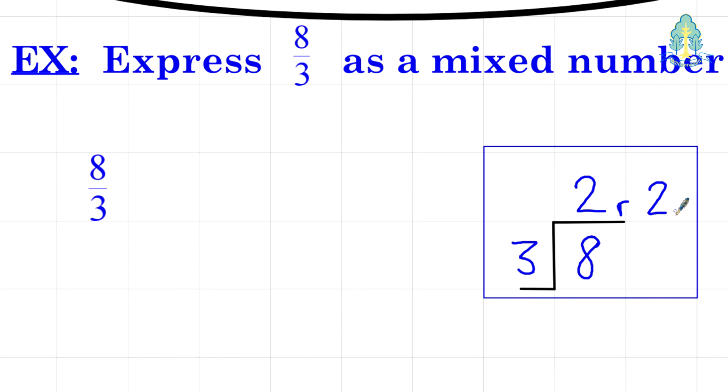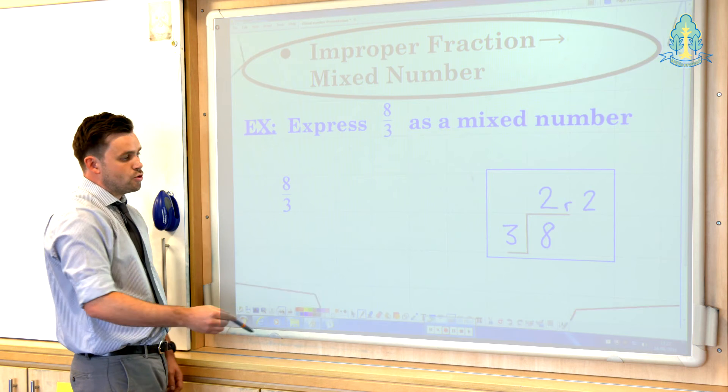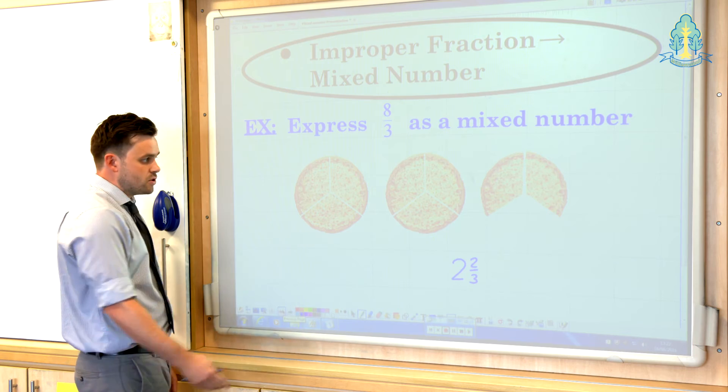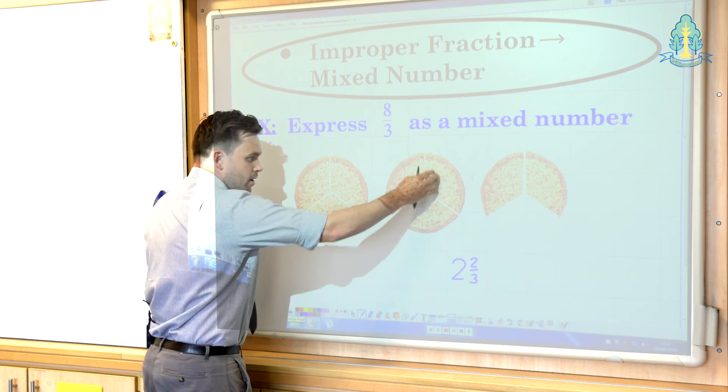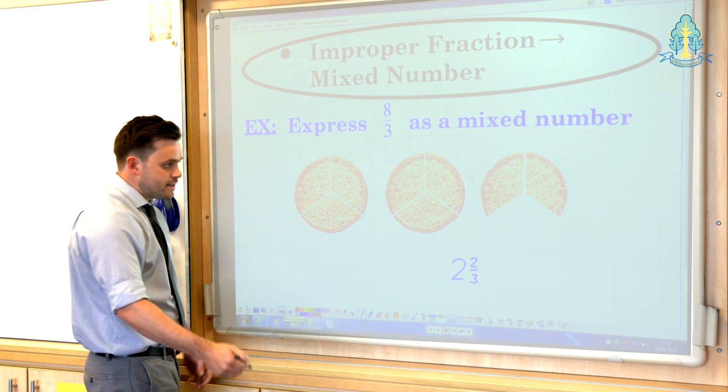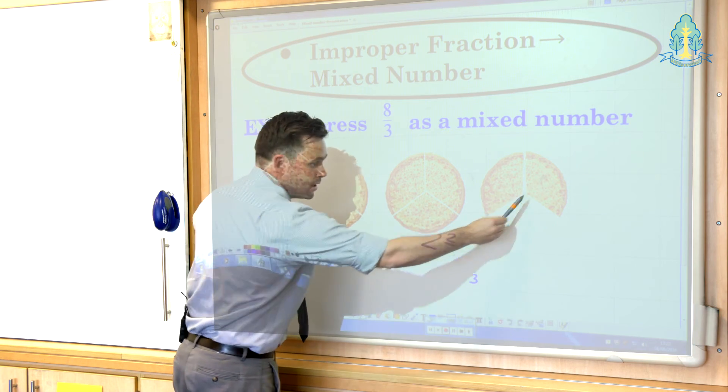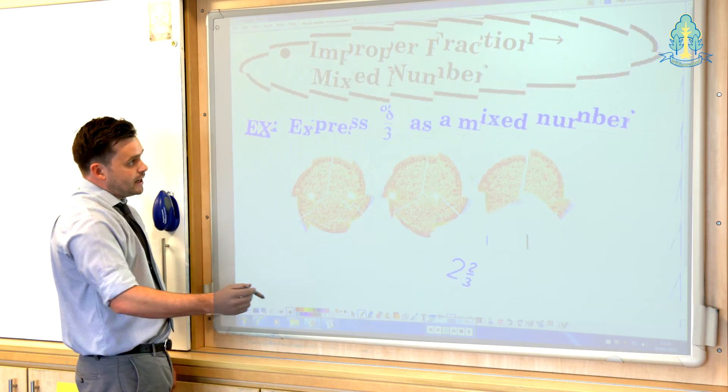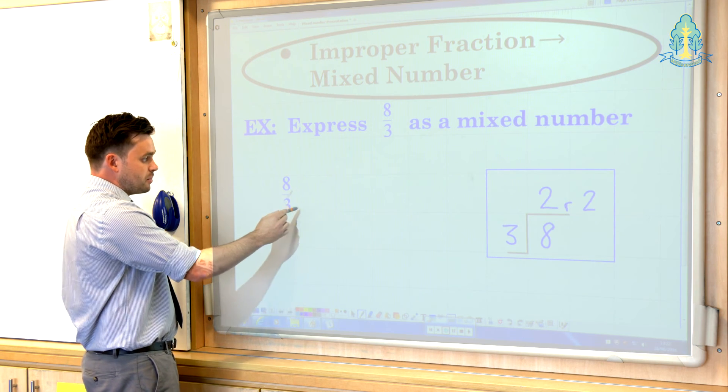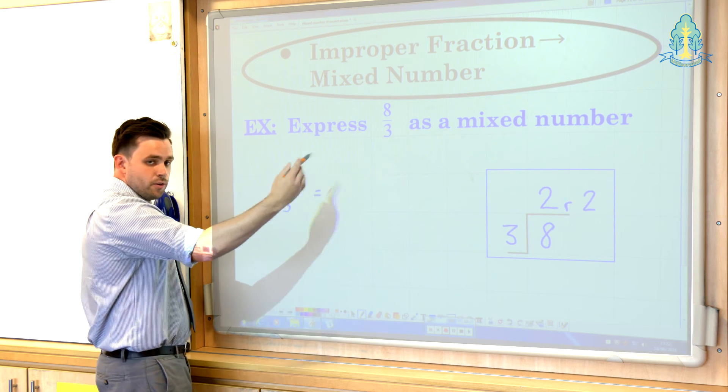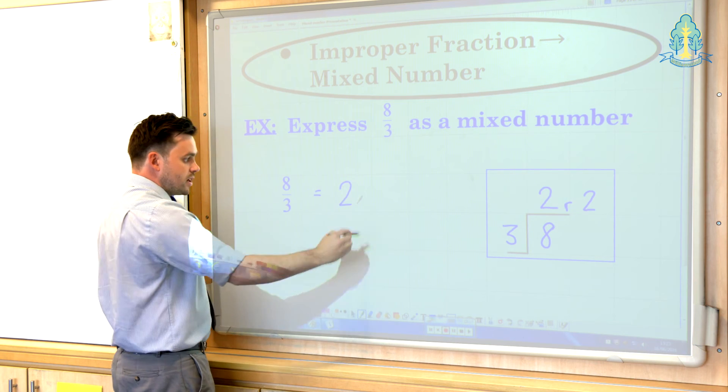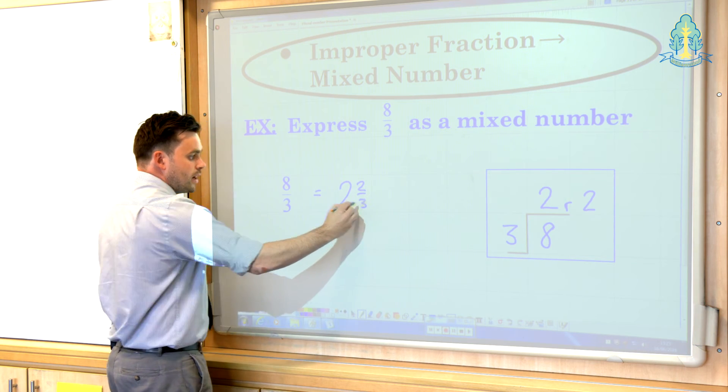Now the first 2, this 2 here, represents the 2 whole numbers or the 2 whole pizzas that we saw earlier. That's our 3 thirds and another 3 thirds, the 3 dividing into the 8. The remainder 2 is the 2 spare slices on this side. So 8 thirds, 8 divided by 3, being 2 remainder 2 as a division, we can write as 2 and 2 thirds.